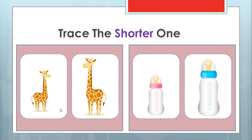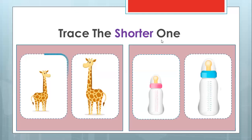Let's trace around the line on the dotted line. Trace with me — go one round, round and round. So we understand that the baby giraffe is shorter. Let's trace around the baby giraffe. That's pretty easy. This is the shorter one, and this is the taller one. So we trace the shorter one.